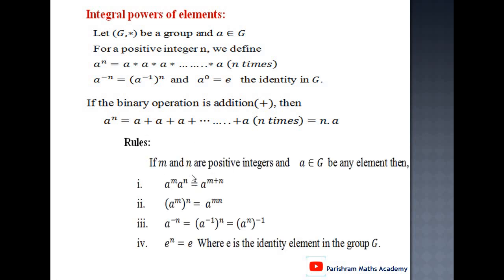Rules: If m and n are positive integers and a belongs to G, then: first, a raised to m times a raised to n equals a raised to (m+n); second, (a raised to m) raised to n equals a raised to mn; third, a raised to -n equals (a inverse) raised to n, which is the same as (a raised to n) inverse; and last, if e is the identity element then e raised to n equals e. These are the rules of indices.